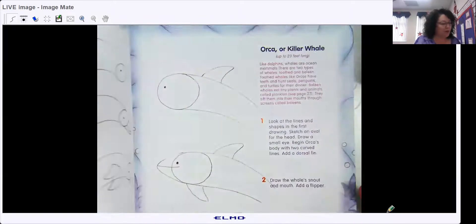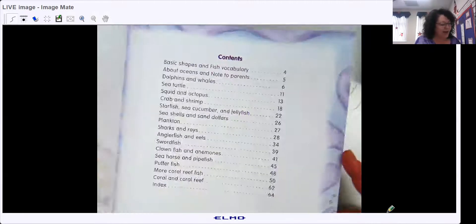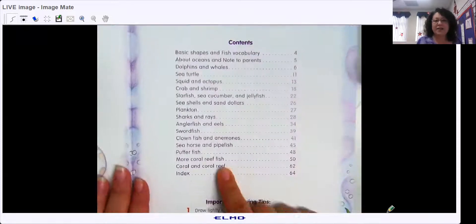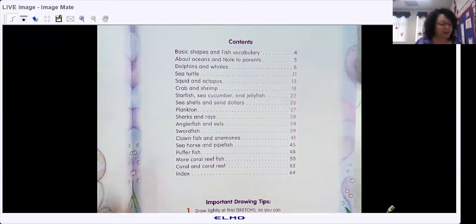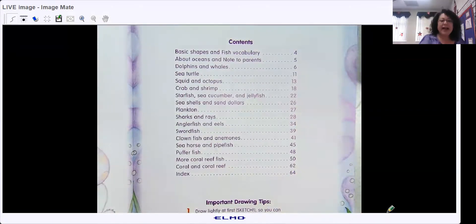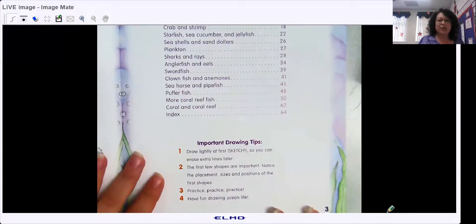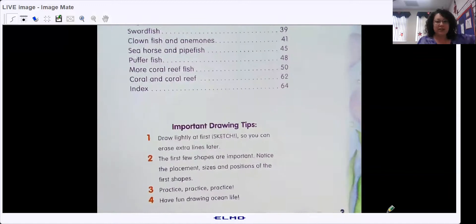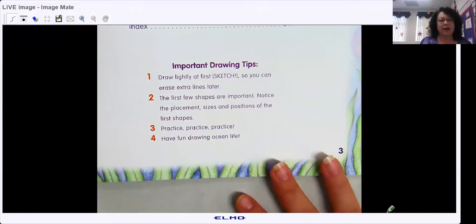Let's start off with our table of contents. It tells us the different kinds of sea life that's in here and it also is giving us important drawing tips. So this is functional text because it's giving us tips on how to do something very well.